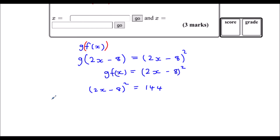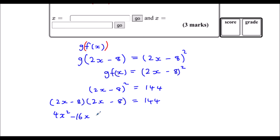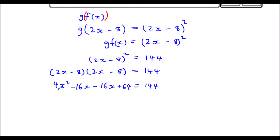So I'm going to expand (2x - 8) squared, which is (2x - 8)(2x - 8) = 144. 2x times 2x is 4x², 2x times -8 is -16x, -8 times 2x is also -16x, and negative times negative gives +64. So I've got 4x² - 32x + 64 = 144. Subtracting 144 from both sides: 64 - 144 = -80. So 4x² - 32x - 80 = 0.